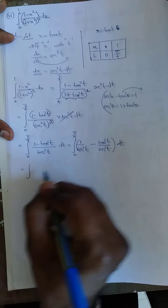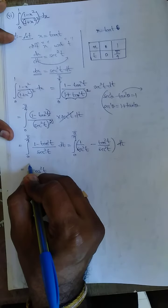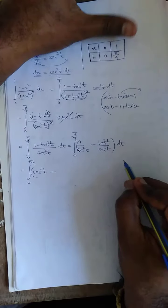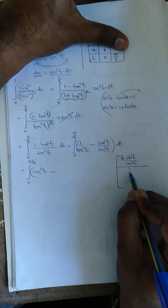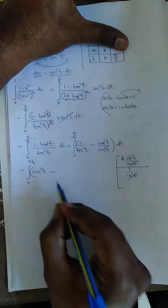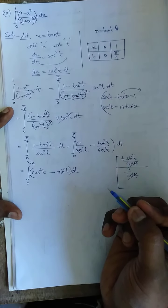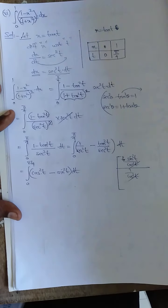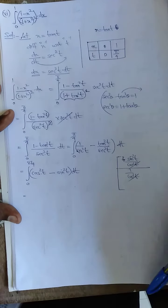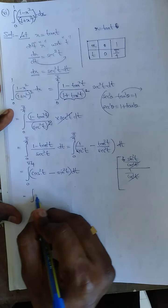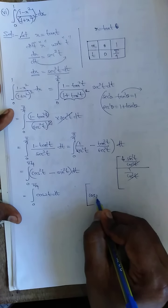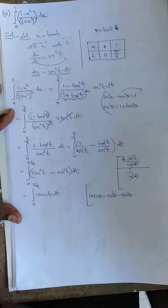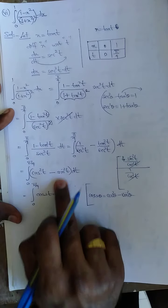Now, what is 1 by secant square t? I can write this as cos square t. Limit 0 to pi by 4: cos square t minus tan square t by secant square t. Tan square t I can write as sin square t by cos square t, divided by secant square which is 1 by cos square t — cos square cancels, remaining sin square t. So we get cos square t minus sin square t. That is one formula: cos 2t. Cos 2 theta equals cos square theta minus sin square theta. So the integral becomes: limit 0 to pi by 4 of cos 2t dt.